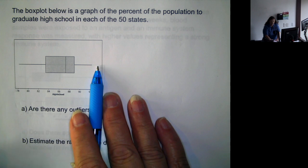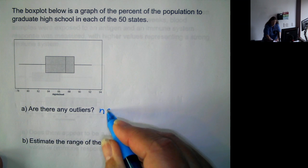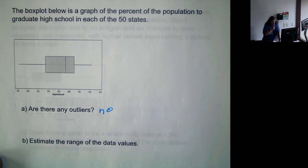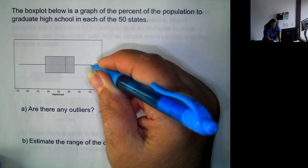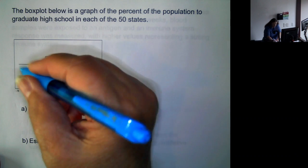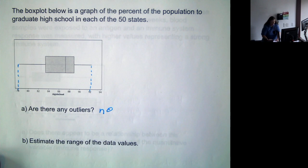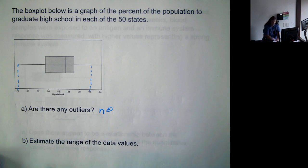There are no asterisks on this box plot, so there are no outliers. We want to estimate the range of data values. Well, this maximum is about 92, the minimum is about 78, so it would be 92 minus 78 or 15.